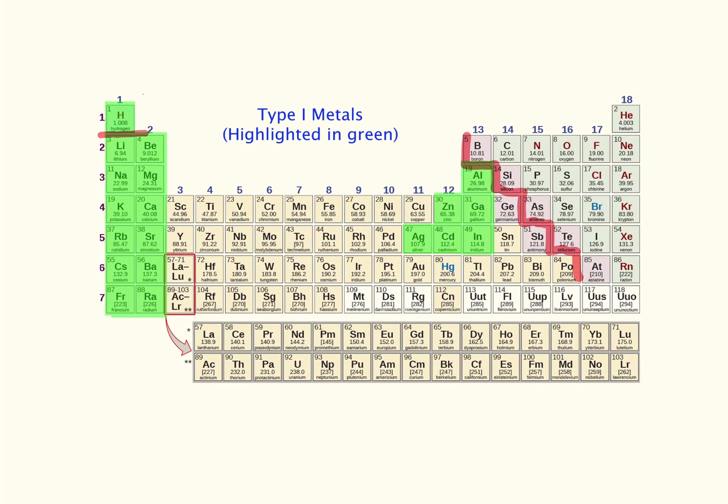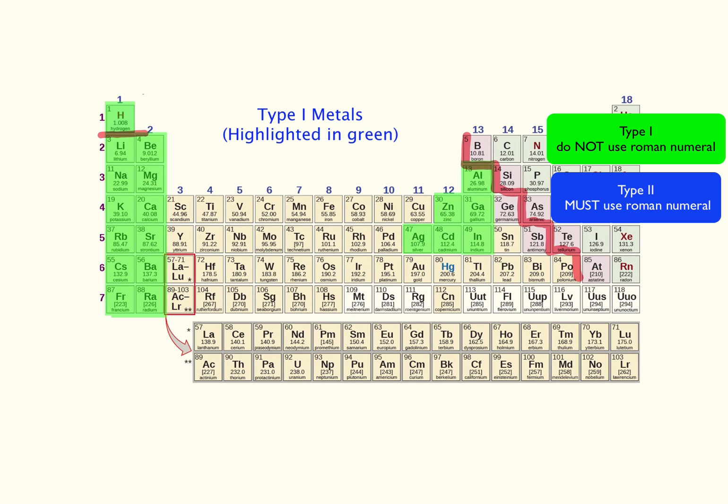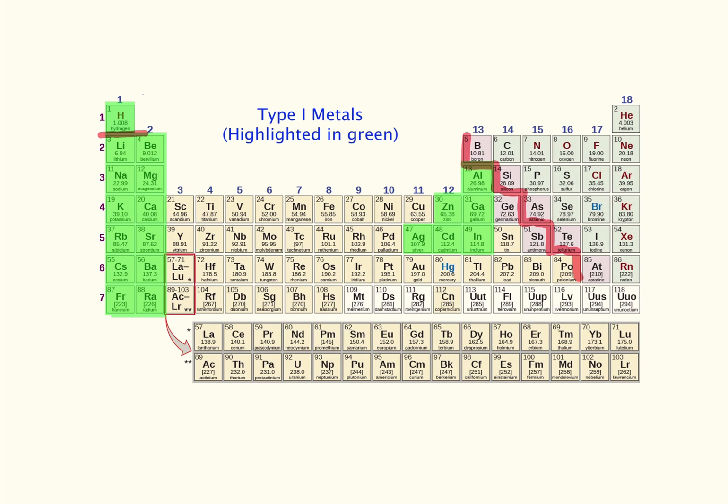So, for nomenclature purposes, remember that Group 1 and Group 2 and that little six-pack are your Type 1 metals. Any other metal, unless told otherwise, you assume it's Type 2 and you'll use a Roman numeral. Keep those two things straight, and you'll do fine.